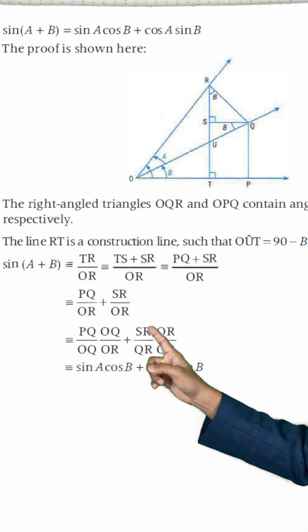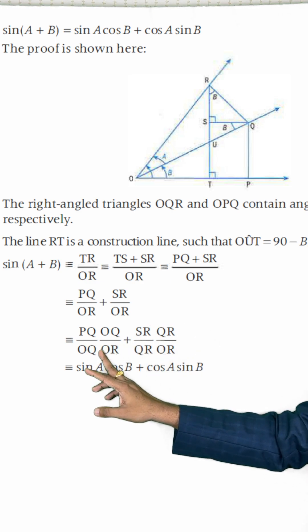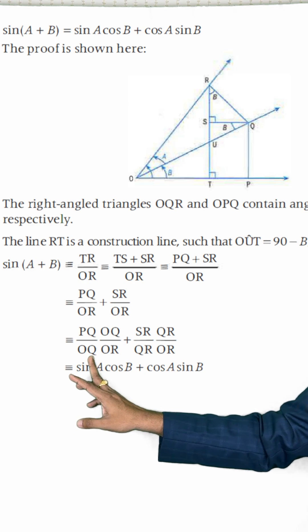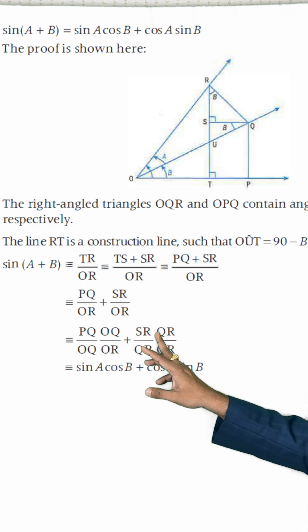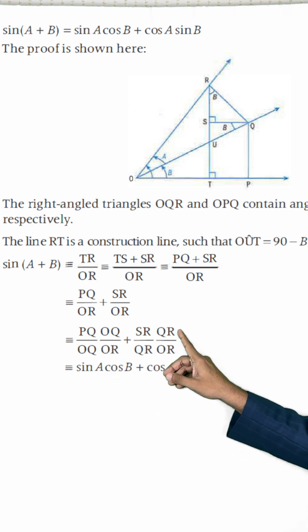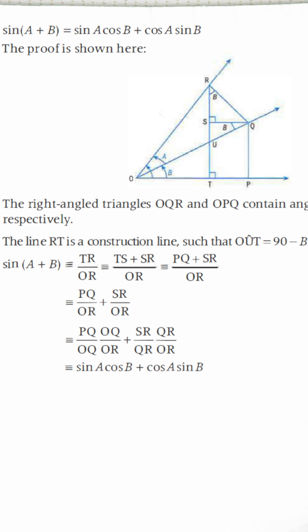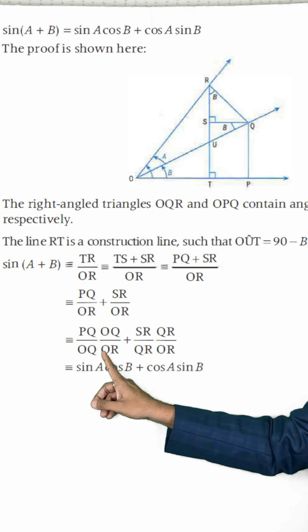Now, for both the terms, for this term I multiplied with OQ, again divided with OQ. And similarly, for this term, multiplied with QR, again divided with QR. Then finally, this relationship you can see: PQ upon OQ.